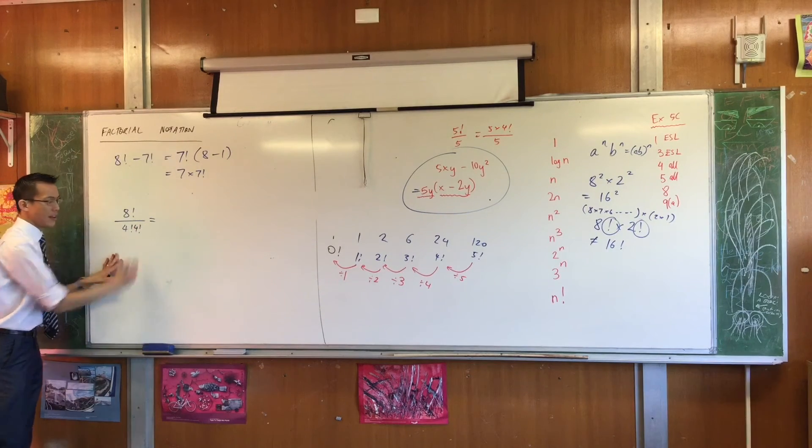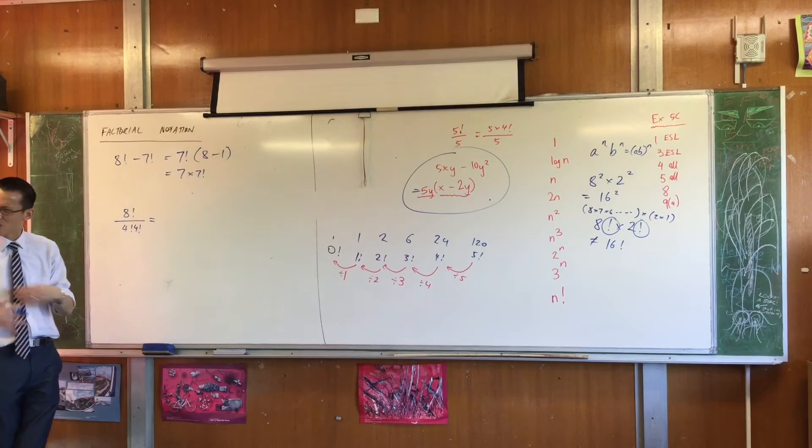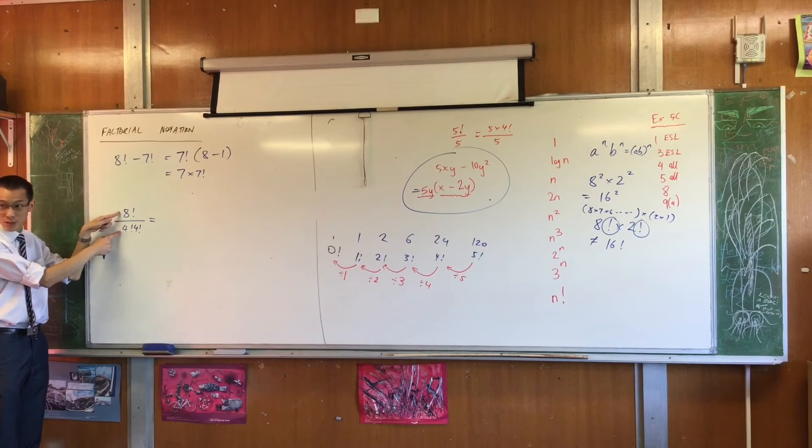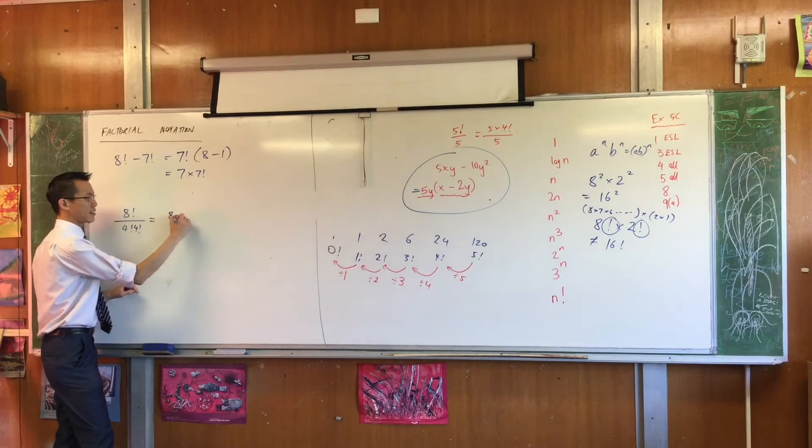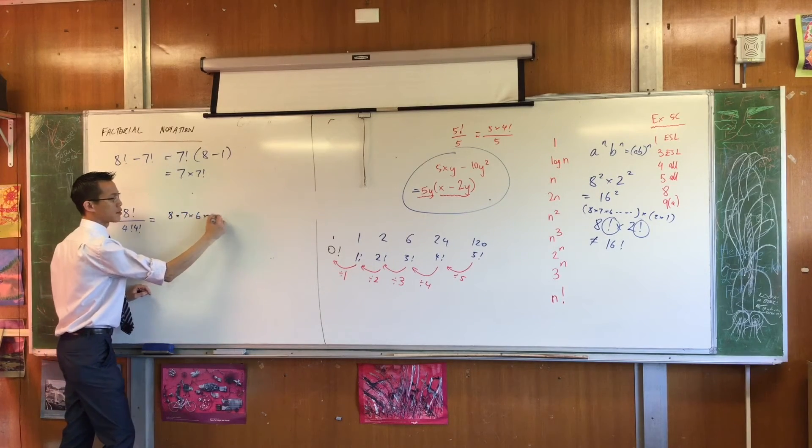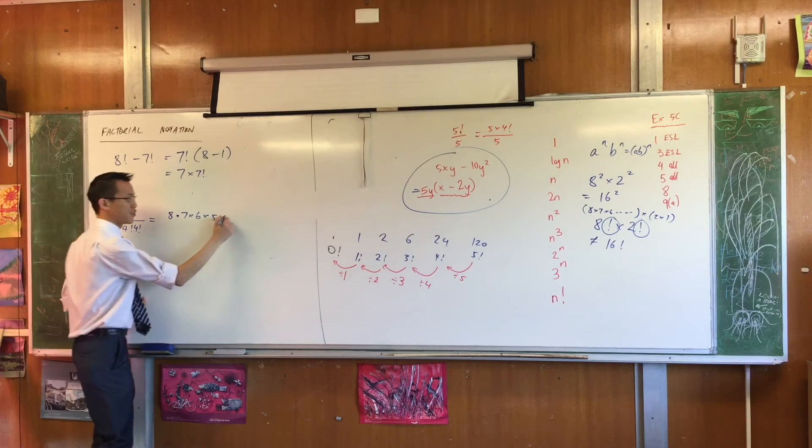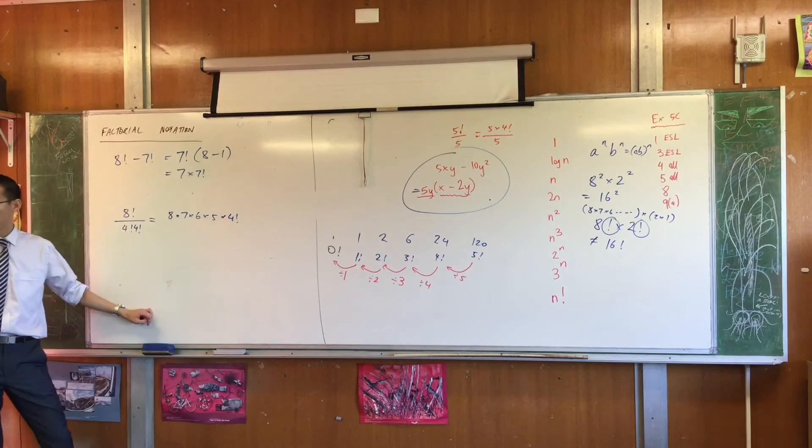Same principle applies here. Now I'm going to take advantage of that unrolling thing I showed you before, because I noticed there are lots of things here that can cancel. So I'm going to write 8 times 7 times 6 times 5. That's the first half of 8 factorial. And the second half is just this guy. Why do I stop at 4 factorial? Because that's something I can cancel.